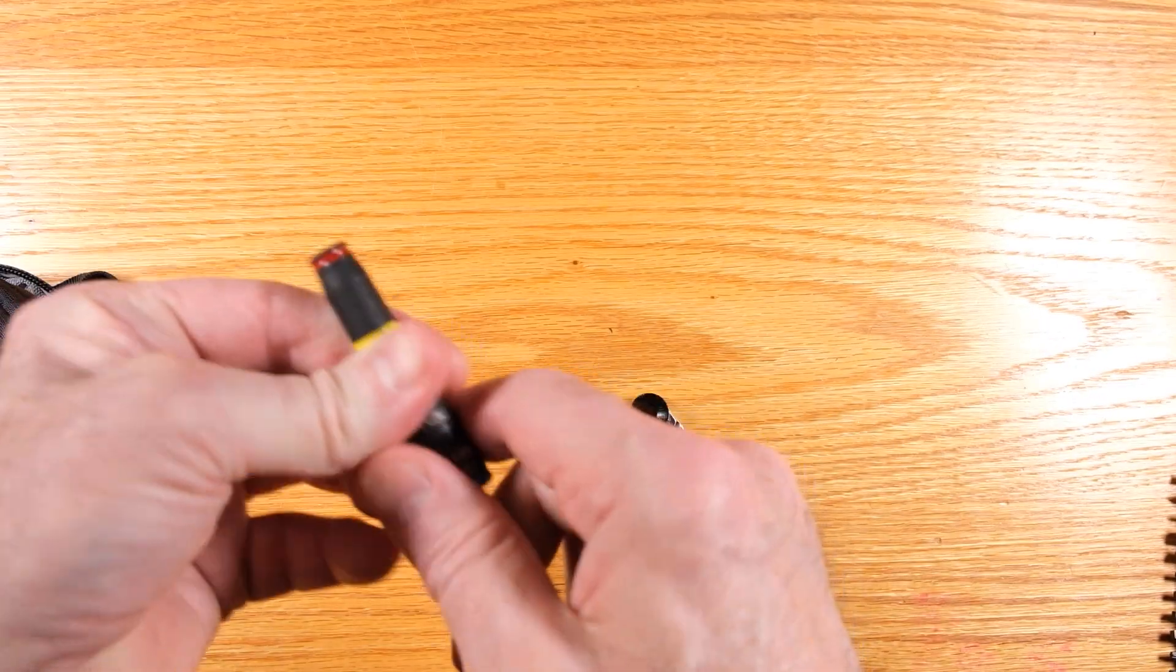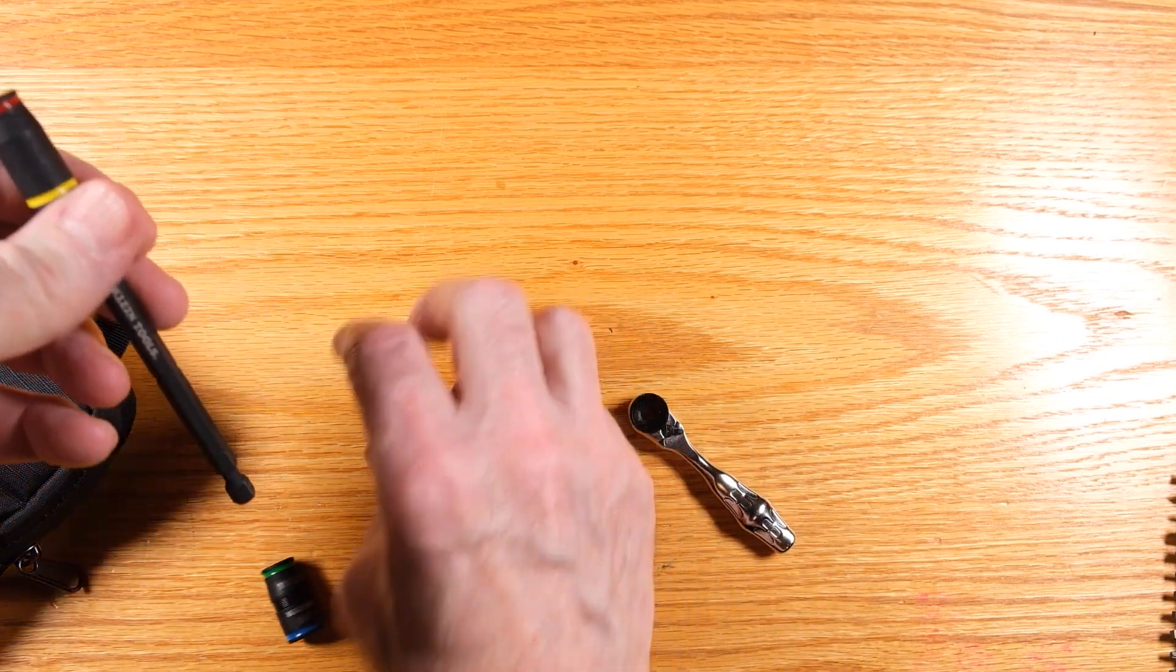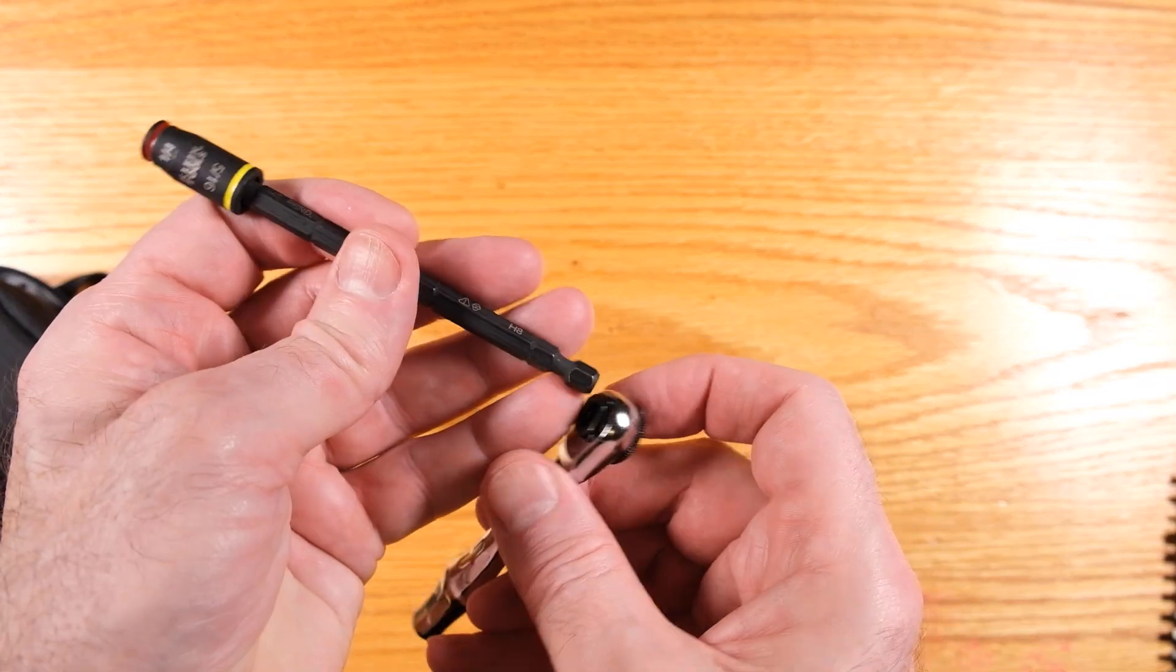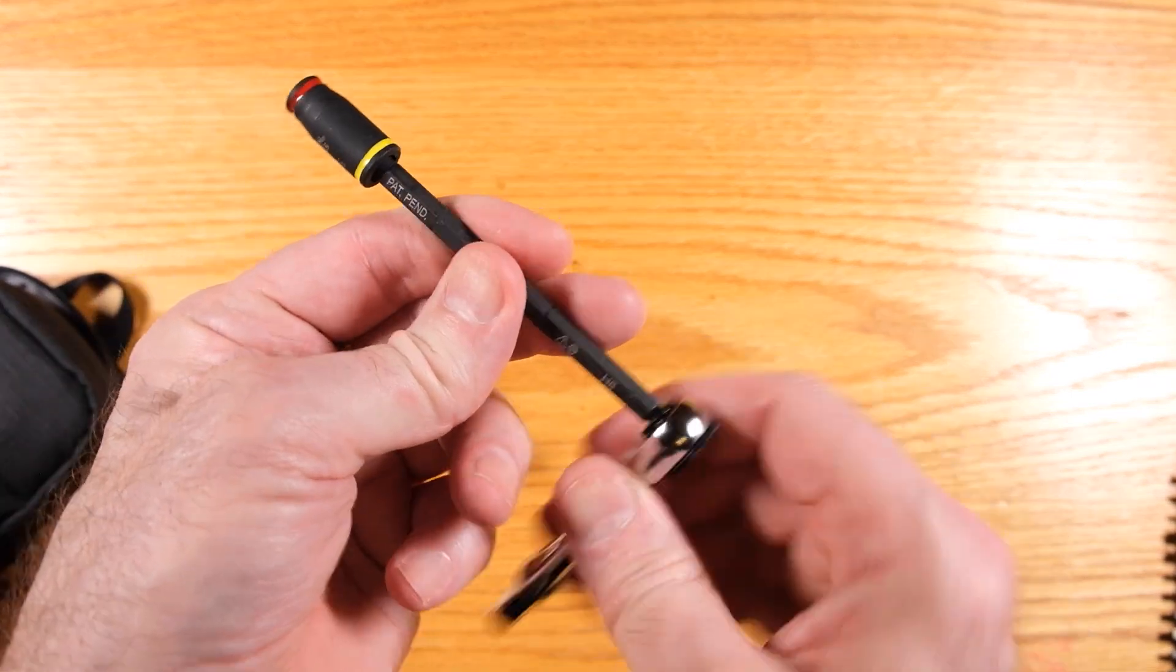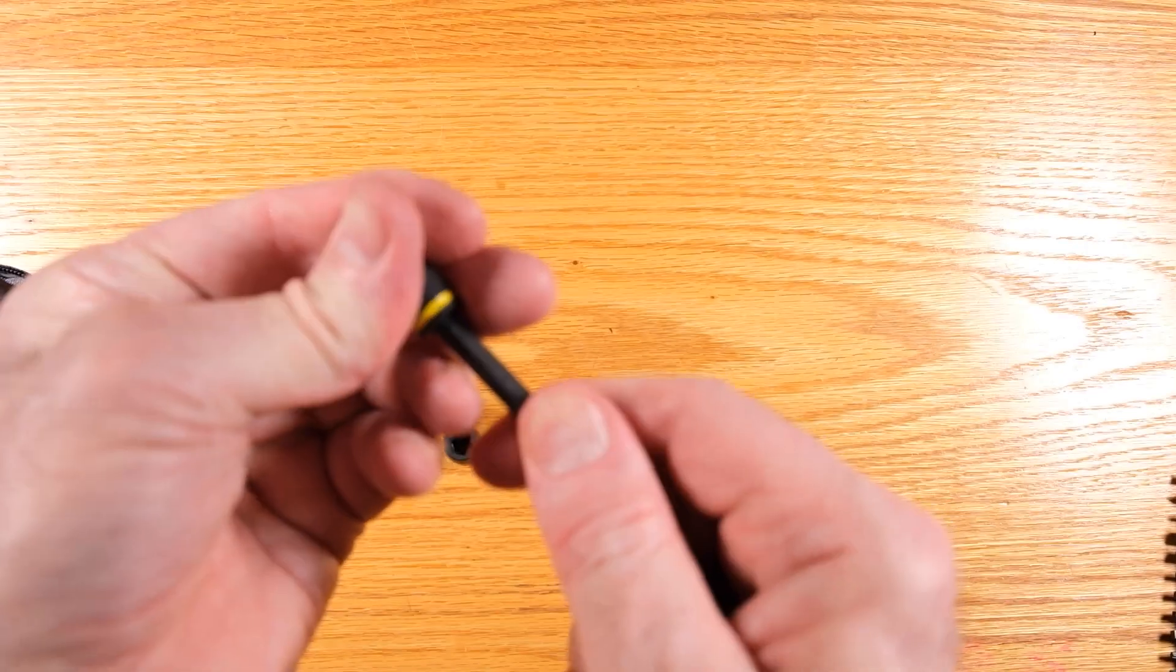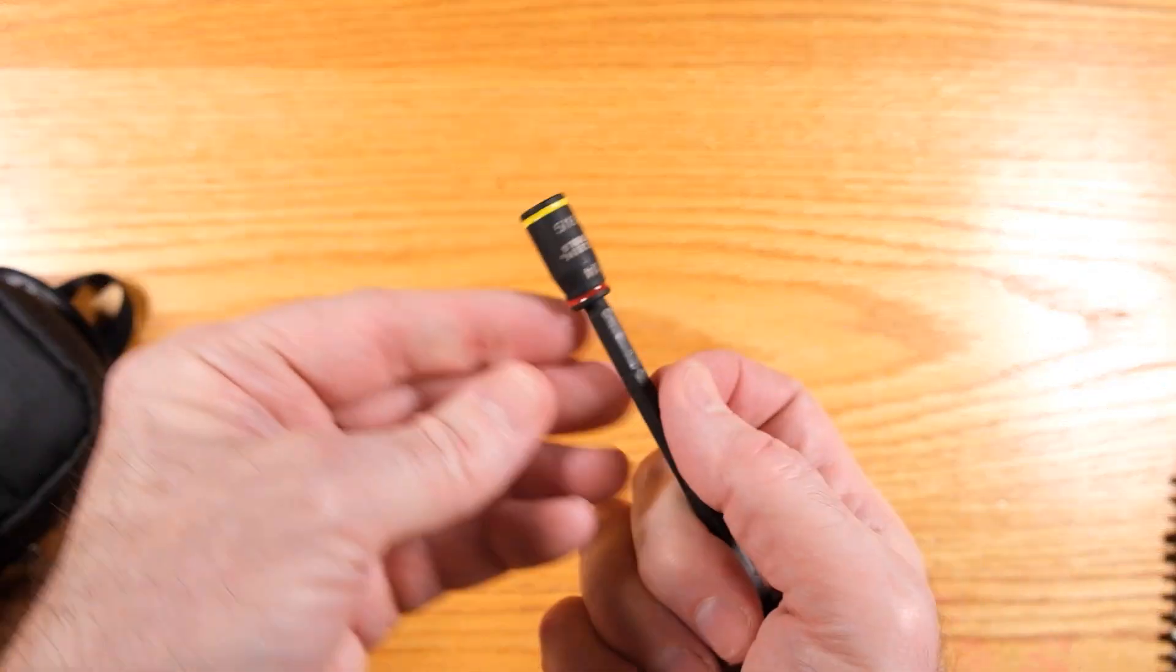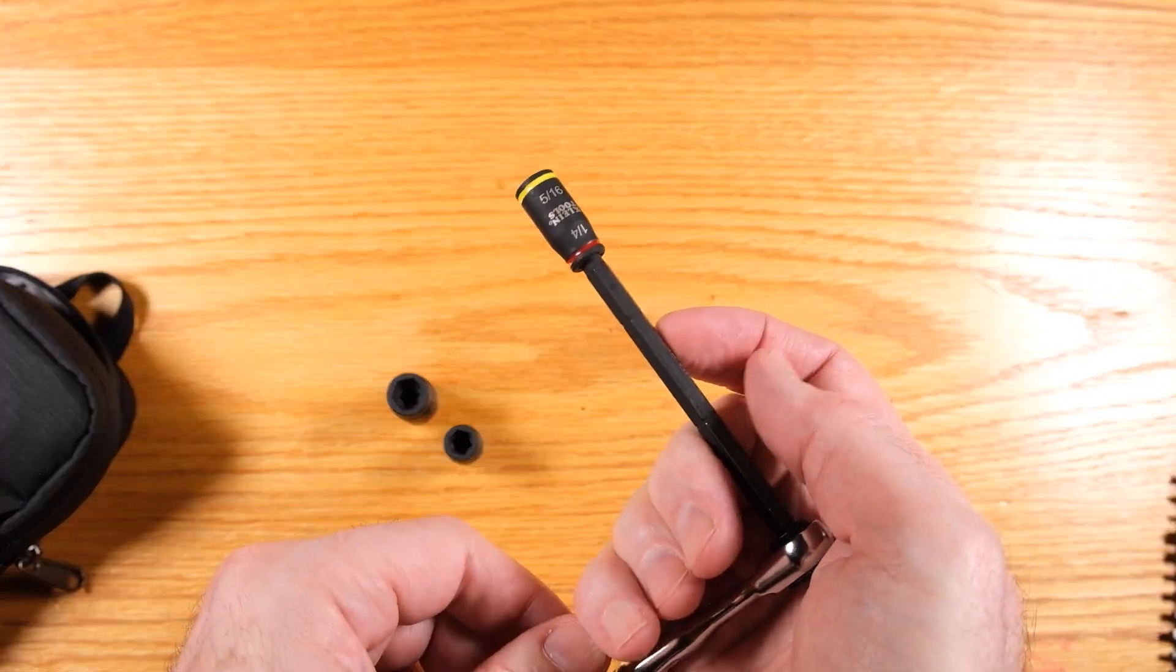You can take these bits off of here and have a single, so that's a quarter inch on the end there. Put this in your ratchet. Flip it around. Got five sixteenths. Or you can put either of the other ones on here.